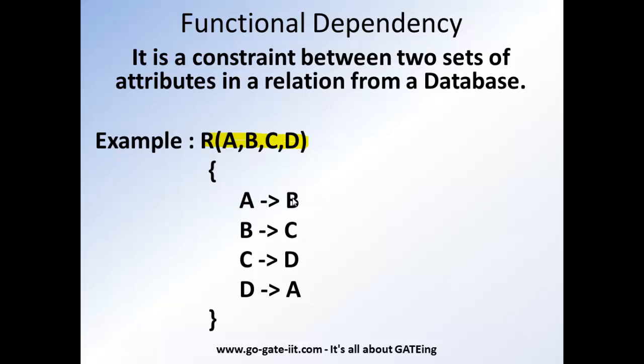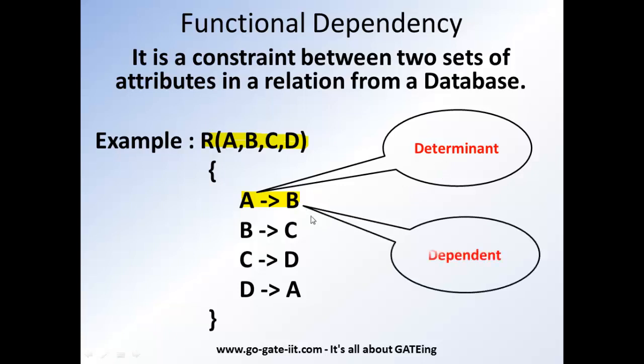And which is denoted in this form. This form, it is read as B is determined by A or A determines B, where LHS is called as determinant and the RHS part is called as dependent. Each value of determinant is associated precisely with only one dependent value.